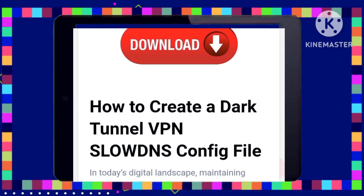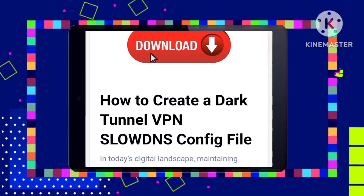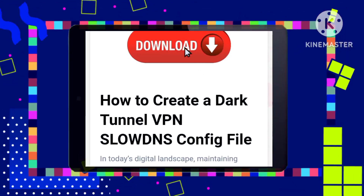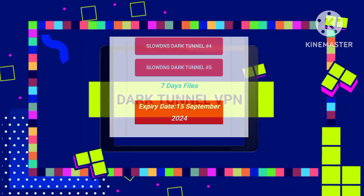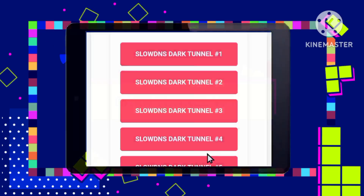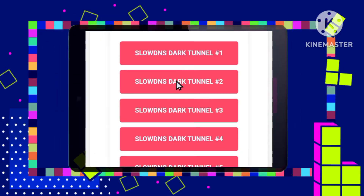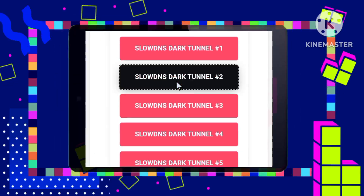Step 5: Downloading the config file. Tap on the download option to access the available config files. Carefully choose a file that suits your needs and tap on it to initiate the download.